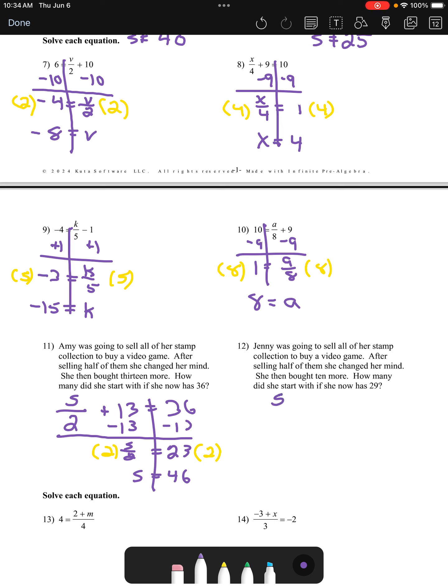Number 12, very similar setup, so feel free to pause the video and try it. Jenny had some stamps. She sold half of them, so she cut what she had in half, she divided by 2. Then she added 10 more to her collection. She currently has 29.